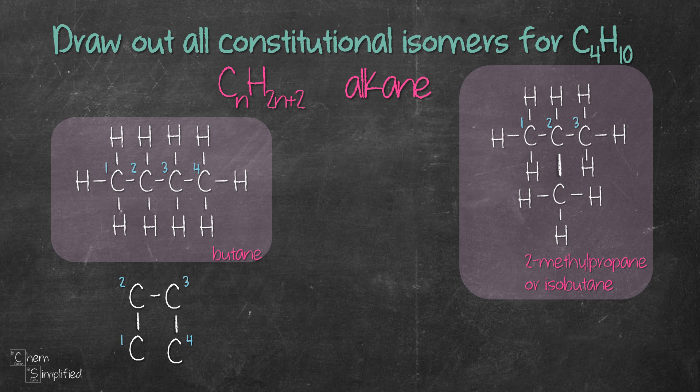Also, if we were to start with two carbon chain and then we place the remaining carbons on the first carbon, essentially it's the same as our second isomer because we actually have a three carbon chain with one carbon substituent on carbon number two.